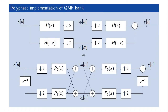Putting everything together, the quadrature mirror filter bank with the introduced symmetry in the filters can be implemented using a polyphase circuit. Comparing the number of multiplications per unit time: the polyphase implementation uses one-fourth of the multiplications of the original QMF bank implementation. The polyphase decomposition alone saves a factor of 2, and then reusing the same polyphase implementation for both the low-pass and high-pass branches saves another factor of 2, yielding an overall factor of 4 reduction through clever use of polyphase filter components.